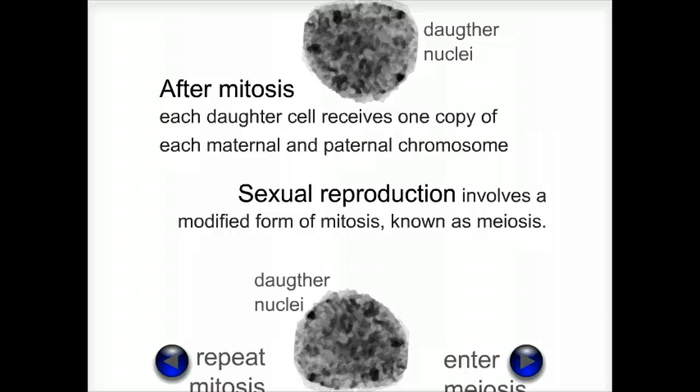But sexual reproduction involves a specific set of cells and is carried out by a modified form of mitosis known as meiosis.